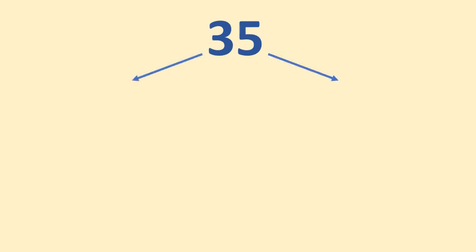Let's try this with another two-digit number: 35. The first digit tells us that there are three tens. The second digit tells us that there are five ones. We can imagine this as three groups of ten and five ones, like this.